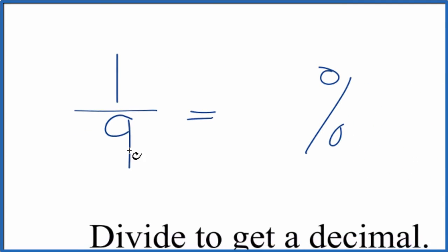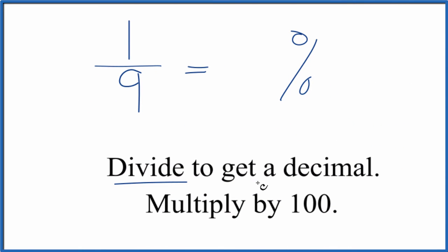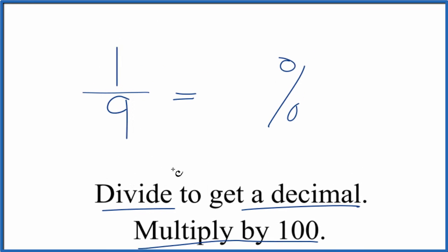And to do that, we divide 1 by 9. That gets us a decimal. And we can take that decimal and multiply it by 100, and then we'll have the percentage for 1/9.